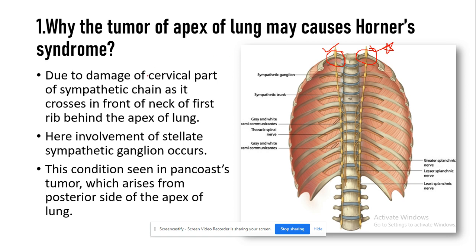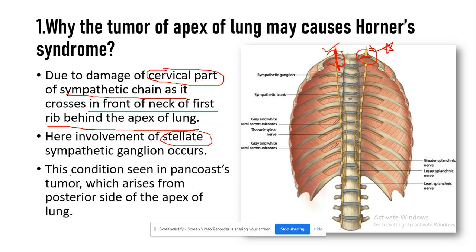The answer lies in this area. Due to damage of the cervical part of the sympathetic chain as it crosses in front of the neck of the first rib, behind the apex of the lung — this is the neck of your first rib, and in front of this area you have this elongated chain, which is the sympathetic chain.